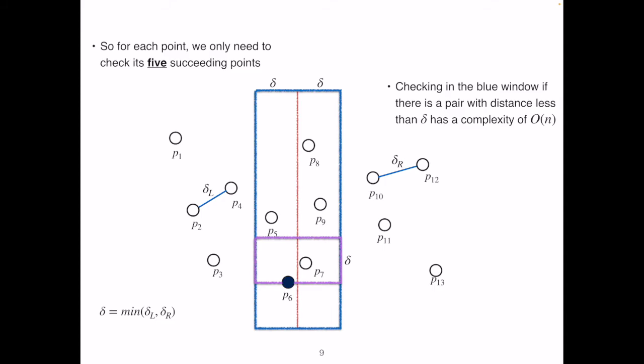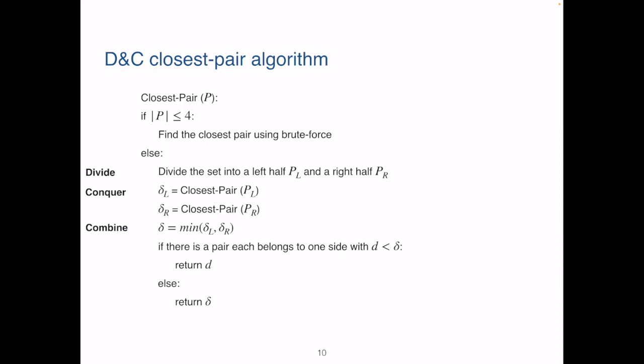and thus, checking in the blue rectangle if there is a pair with a distance less than delta has a complexity of big O of n. Let's get back to the pseudocode algorithm for closest pair.